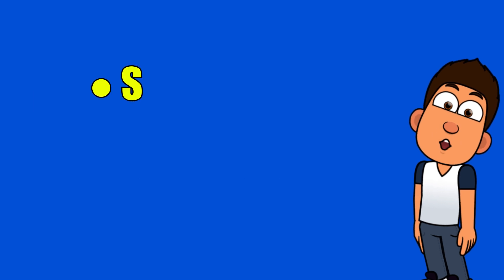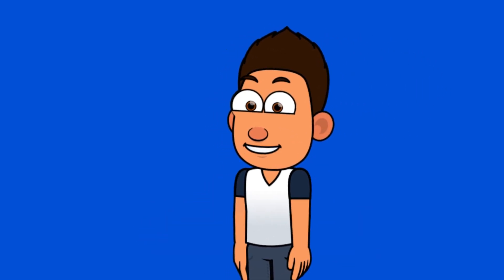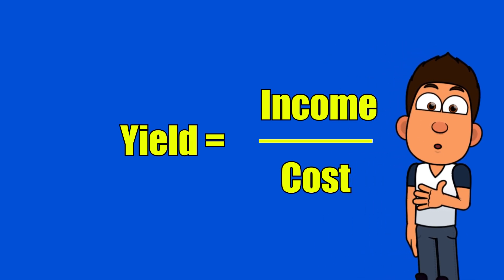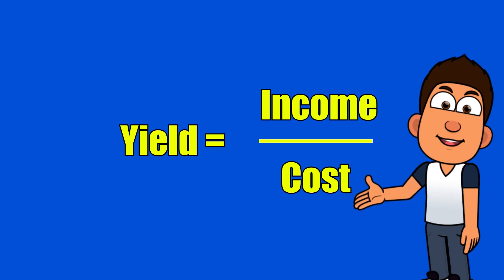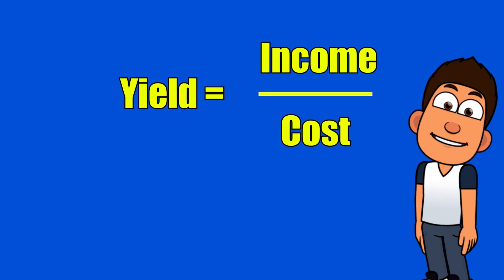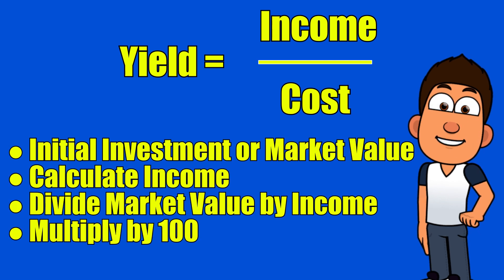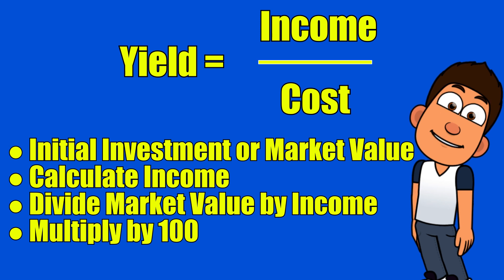Some common investments used for calculating yield are stocks, bonds, and real estate. The percent yield formula calculates the annual income return of an investment by putting income in the numerator and cost or market price in the denominator: yield equals annual income over investment value. To calculate yield, we find the initial investment or market value, calculate the amount of income, divide the income by the market value, and multiply by 100 to get the percentage.